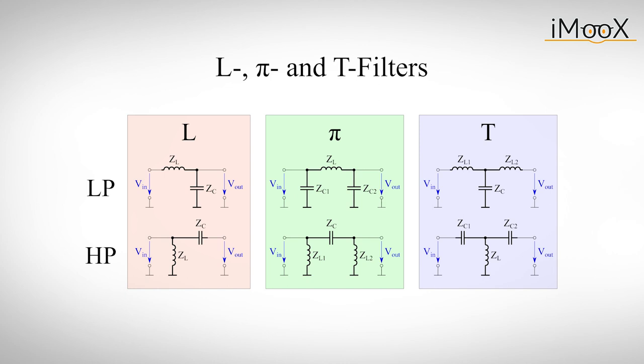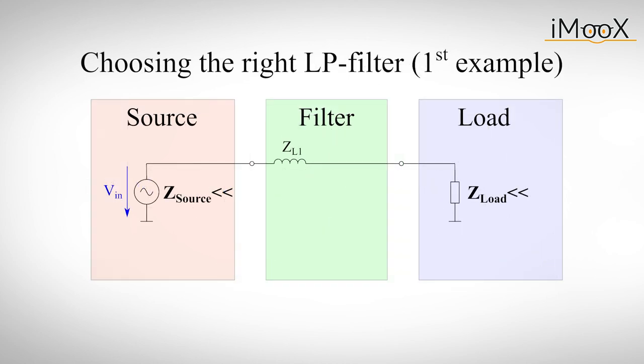Which one is best for an application is decided by the output impedance of the power supply and the input impedance of the load. To ensure the best performance of the filter, we always want an impedance mismatch in order to minimize the power transfer for high frequency signals. So for a source with low impedance, the first element of the filter must have high impedance at high frequencies, like the inductor does.